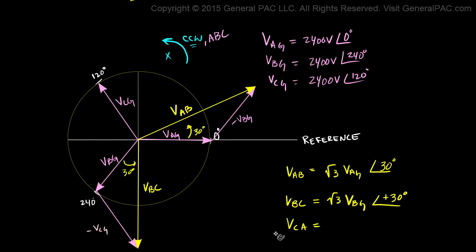And then similarly, we'll do the same thing with VCA. So here's VCA, here's negative VAG. We take VAG, rotate it by 30 degrees in the counter-clockwise direction, and then multiply it by the square root of 3 to equal VCA, which is this phasor here. So now we have the line to ground voltages as well as the line to line voltages represented in our phasor diagram.